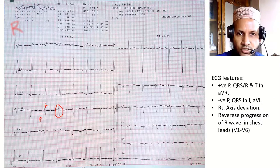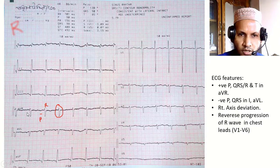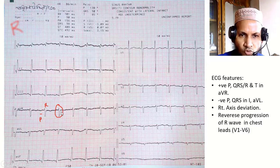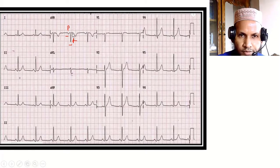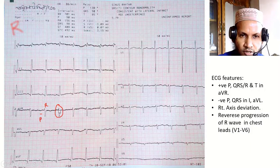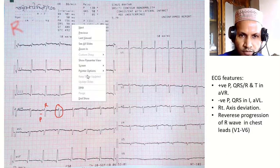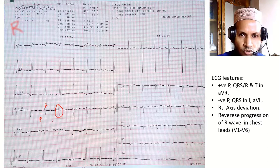In the ECG we can see some abnormality. In lead AVR there is a positive P wave and positive R wave or QRS complex. In a normal ECG the P wave remains negative and the R wave is also negative — there is no positive R wave in AVR. These abnormalities may be due to either dextrocardia or technical error, that is limb lead reversal.